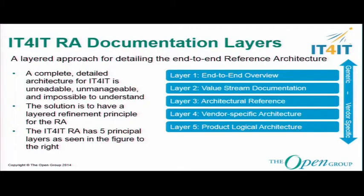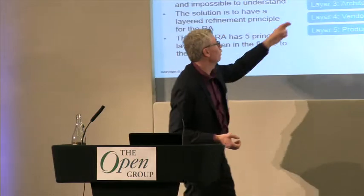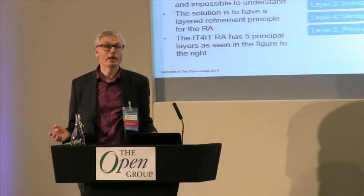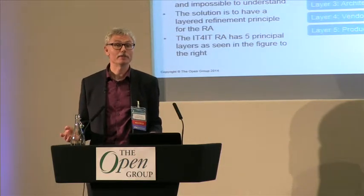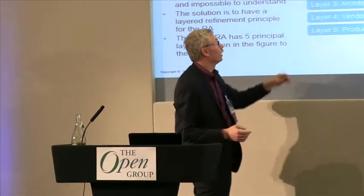The second layer gives a more detailed description of each of the value streams and talks about the actual flow of data going on. The third layer is the architectural reference. Here we shift to a notation style — a formal ArchiMate notation — where the top layer uses an extremely simplified notation so that people who are not trained architects will not say they don't understand it simply because of symbols they haven't seen. They're only a circle, a box, and a line — everybody can understand that pretty quickly.